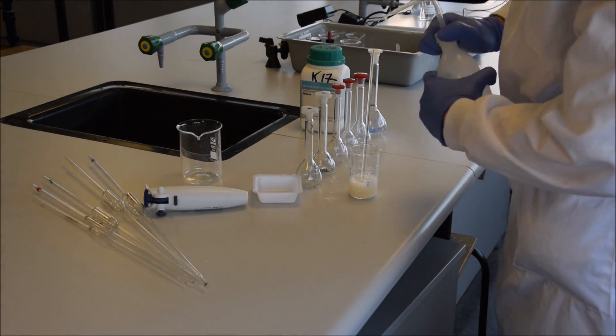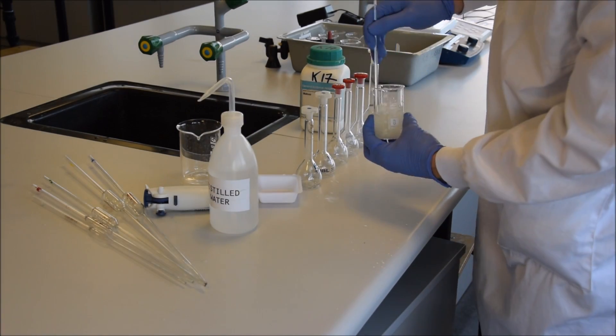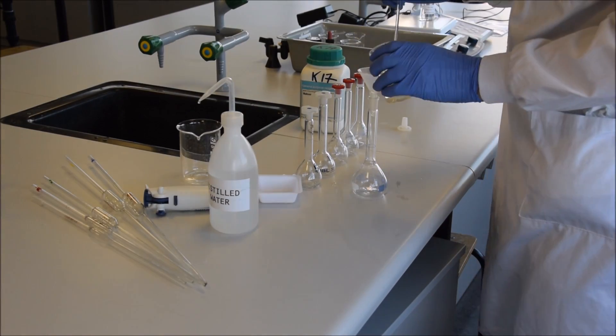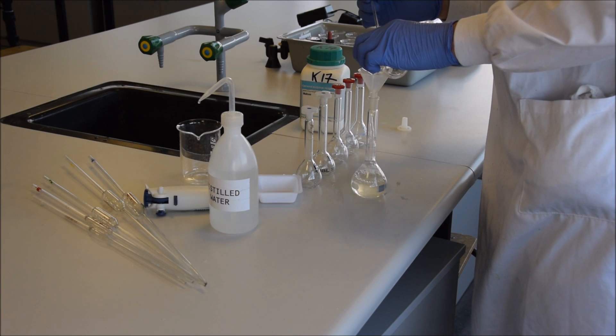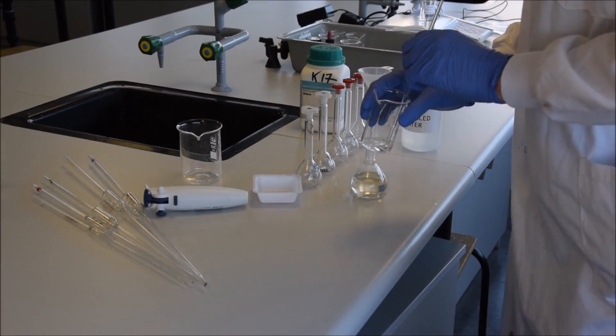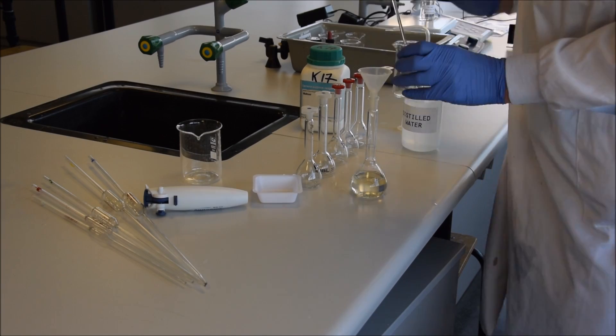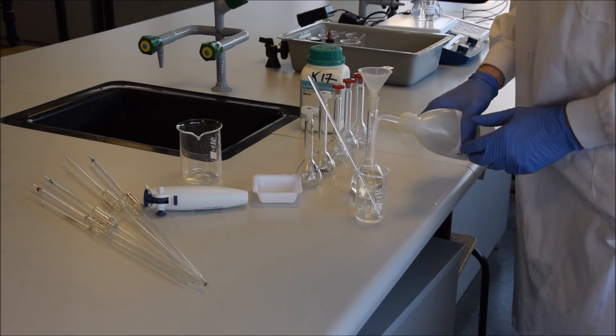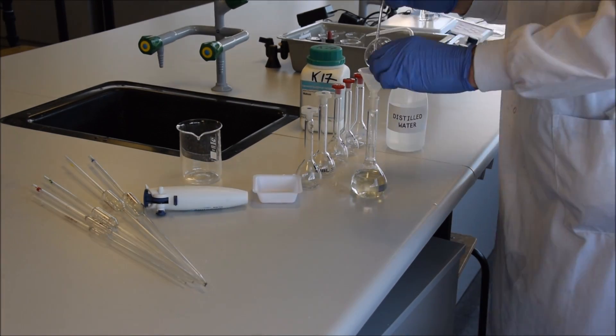The first thing we've got to do is make up some standard solutions. I've weighed out exactly 10 grams of sugar and I'm going to quantitatively transfer it into a volumetric flask, making sure all the material gets into the volumetric flask, none of it spilled, wash everything down, properly dissolve it, and then the very last thing I do is make it up to the line.